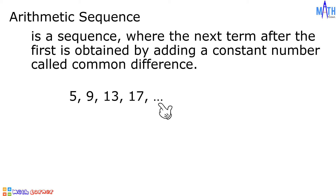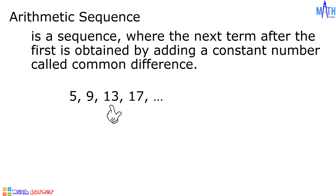These three dots, called ellipses, means the pattern continues without end. The first term of this arithmetic sequence is 5, the second term is 9, the third term is 13, and the fourth term is equal to 17.